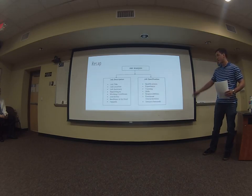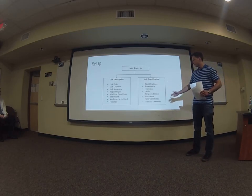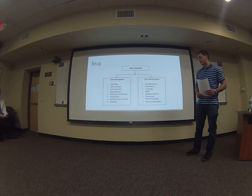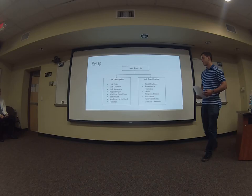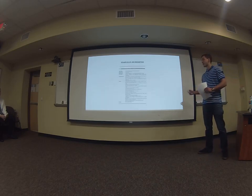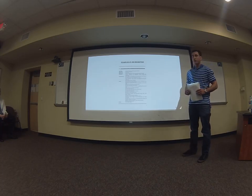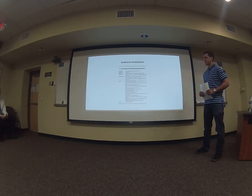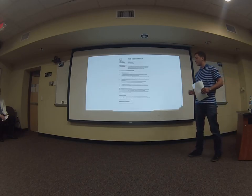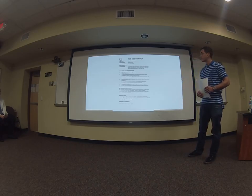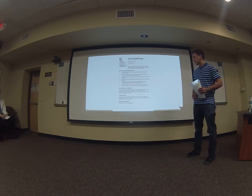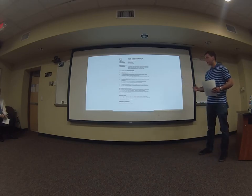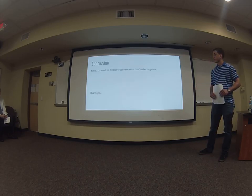Here's an overview. Job specification covers qualifications, experience, training skills, responsibilities, emotional characteristics, and sensory demands. Job description covers the other side: job title, job location, job summary, reporting to, working conditions, job duties, machines to be used, and hazards on the job. Here's another example of a job description — they all vary depending on the type of work. This one shows qualifications, duties, and salary in a generic format, since every company and position has their own template. Another example is for the casual sales assistant position at retail services, covering duties, responsibilities, key working relationships, hours of work, duration of contract, job purpose, reporting to, and department.